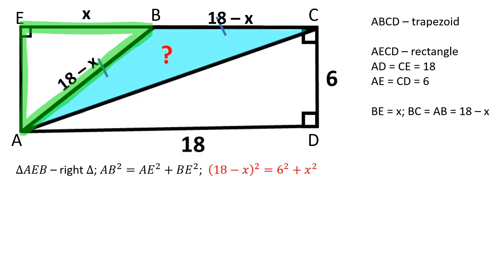By the Pythagorean theorem, AB squared is equal to AE squared plus BE squared. Let's substitute in the variables. After expanding both sides and simplifying the equation, we are left with X is equal to 8.